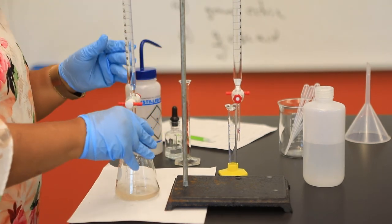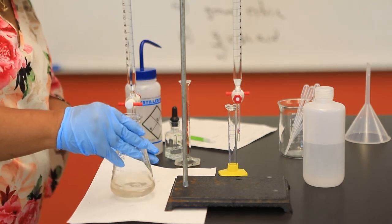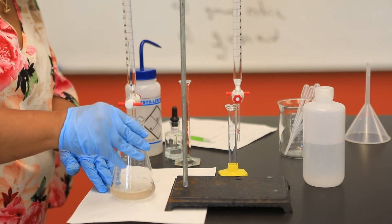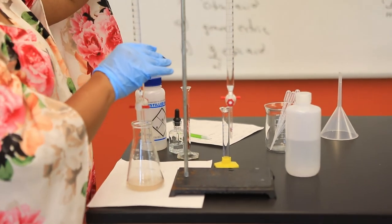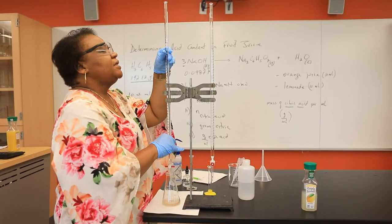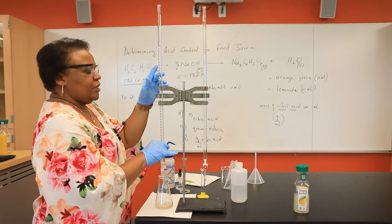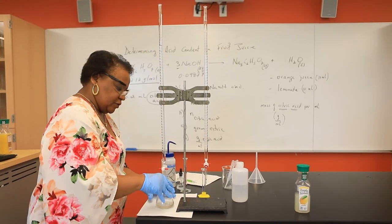Now the titration is complete, you'll notice that the solution - there is a color change. It's obviously faint pink in color, and the final volume is 9.80 mLs. So the final burette reading is 9.80 mLs.